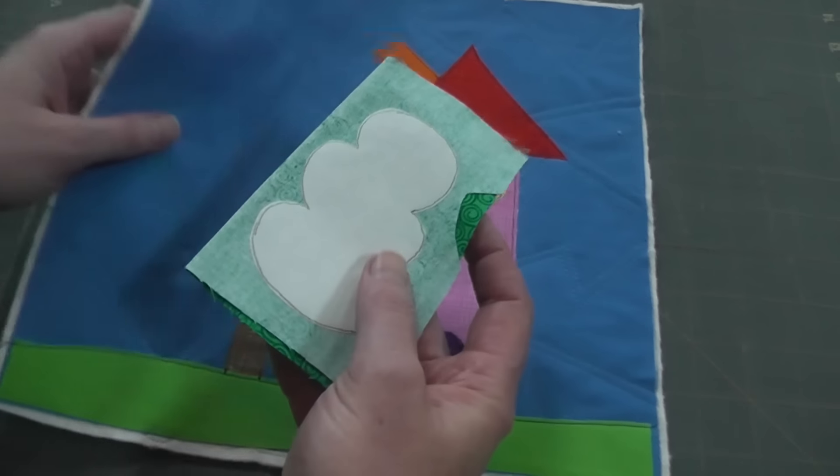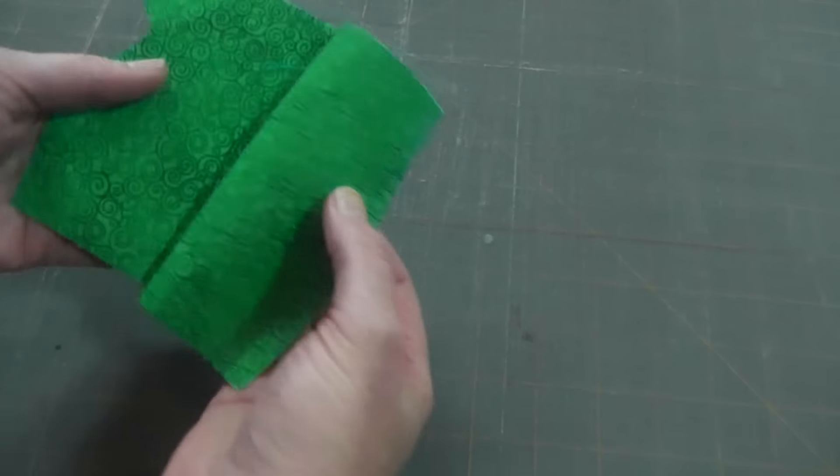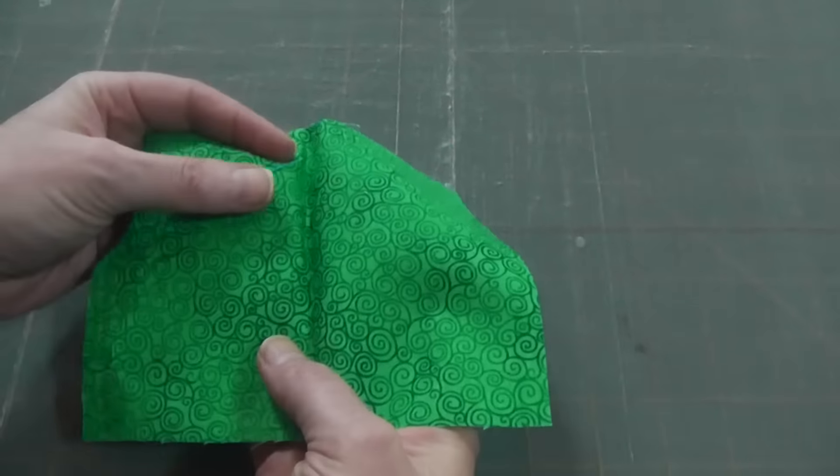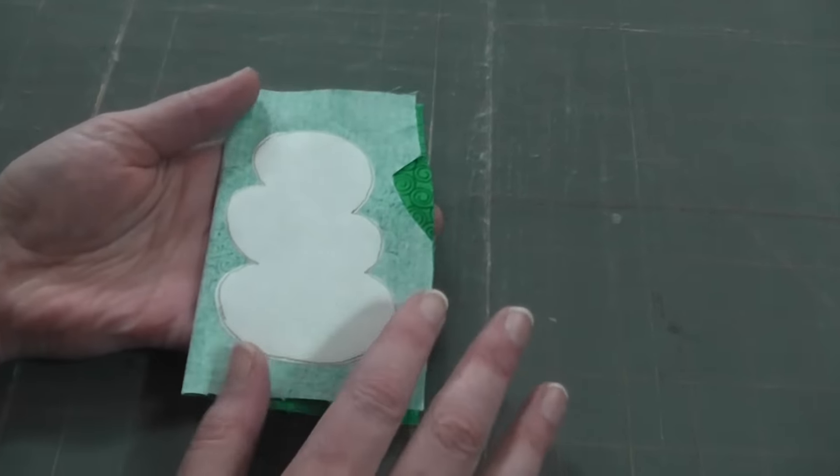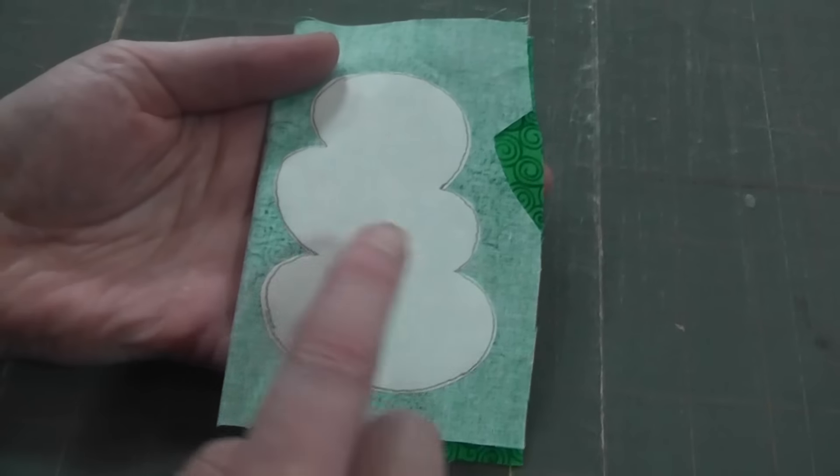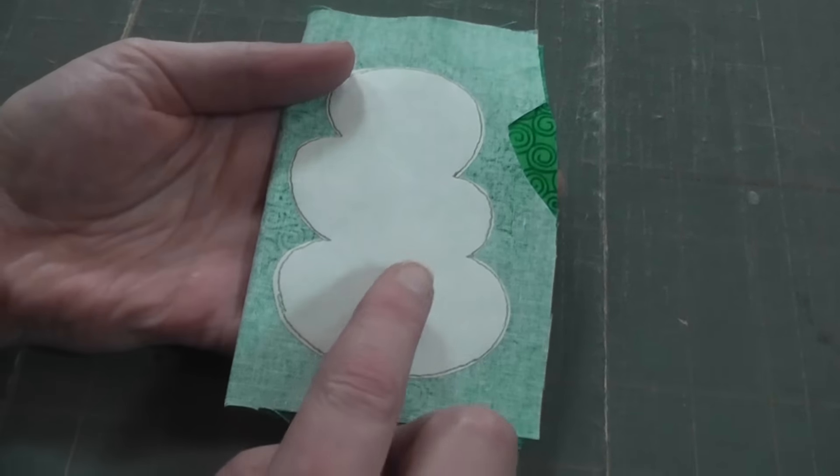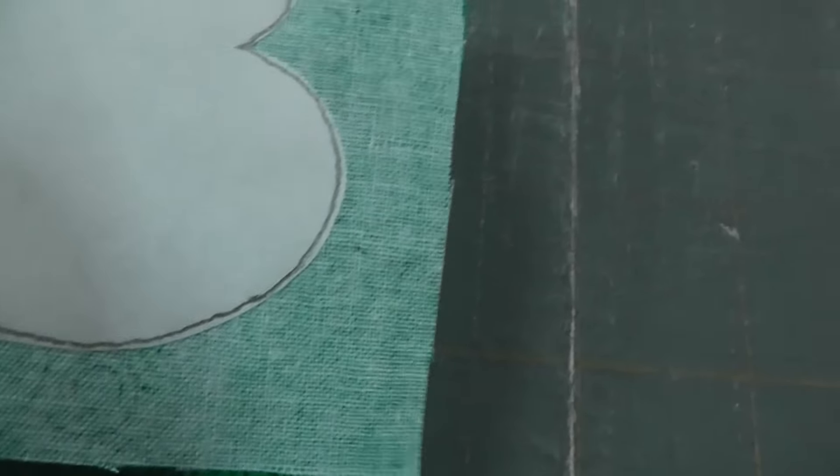This is the piece we're going to work with. It is two pieces of fabric. Well, actually this is one piece folded in half, but you can use two pieces. You want to put the two pieces right side together, and then I've traced the tree pattern that I'm going to use on freezer paper.